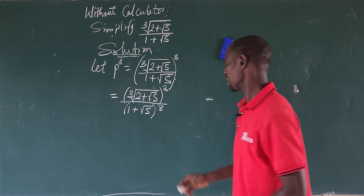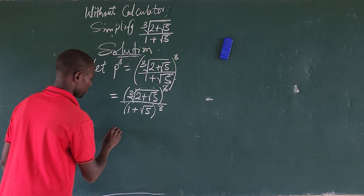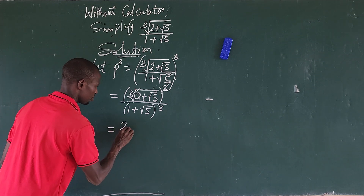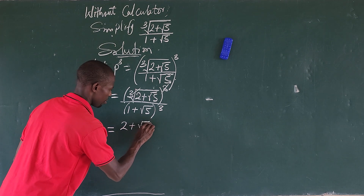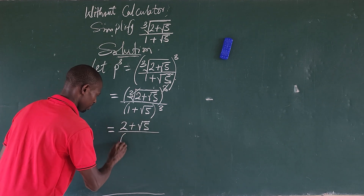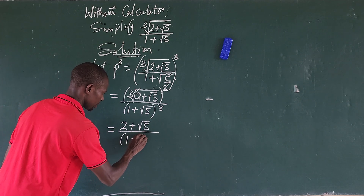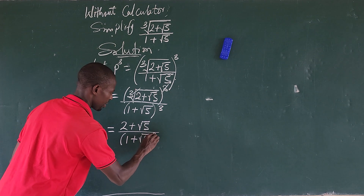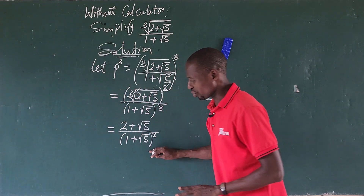This simplifies nicely. The cube root cubed on the numerator cancels, leaving us with (2 + √5) all over (1 + √5)³. Now we focus on expanding the denominator.